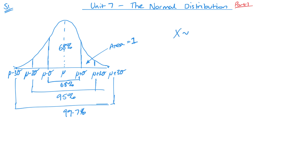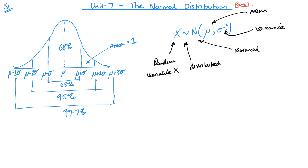Normal distribution is going to look roughly like this. So X is my random variable — it doesn't have to be X, it could be Y or anything. This little symbol just means 'distributed', N for normal, then we've got mu for mean, and our symbol for standard deviation. Remember that this second parameter is for variance, and standard deviation is the square root of that.